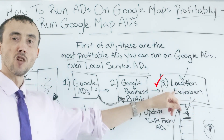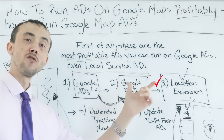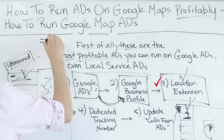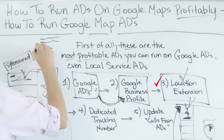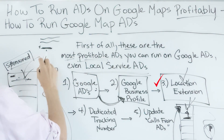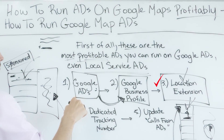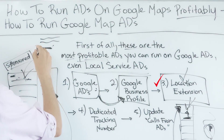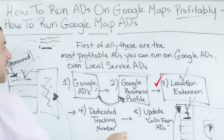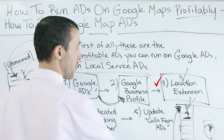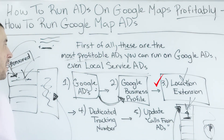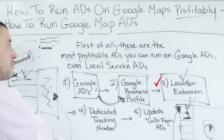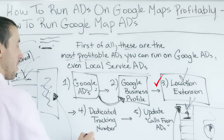A lot of people realize the location extension makes your Google Maps address show up underneath your ad — there's a little pin and your address — and if you click it, it takes the user to Google Maps. But what it also does is it puts you in position to get shown in the sponsored listing, the top spot in the three pack, as well as in the full view of Google Maps and as a promoted pin on the map.